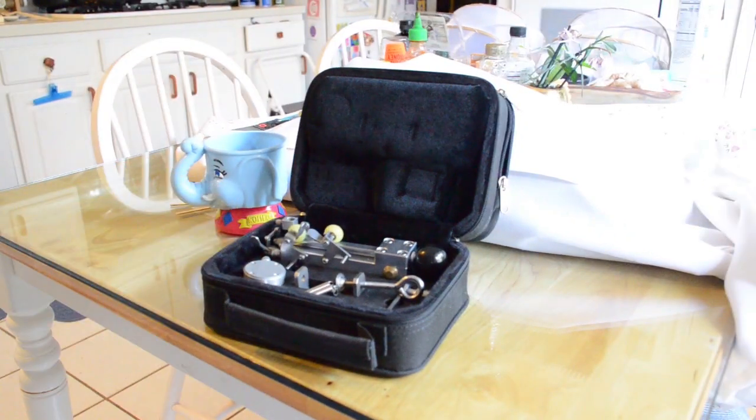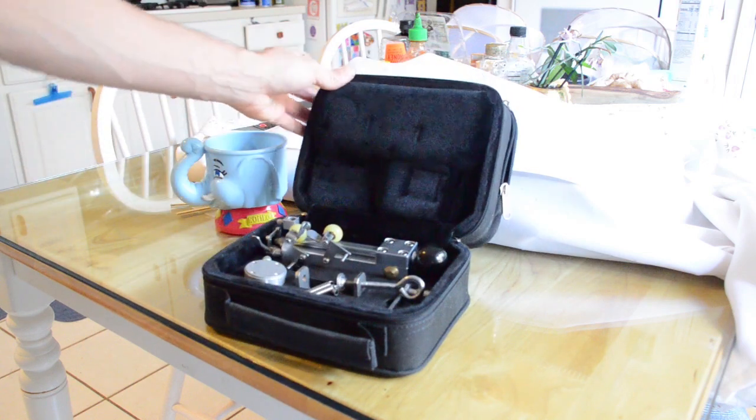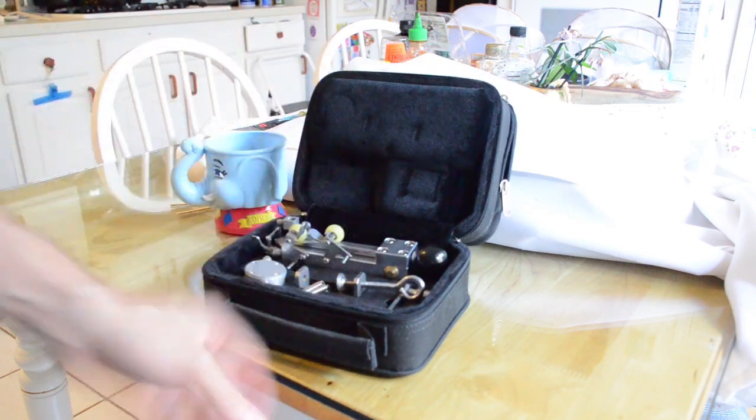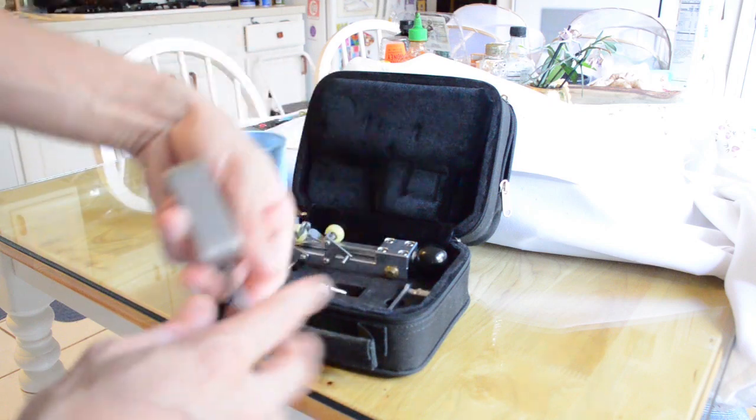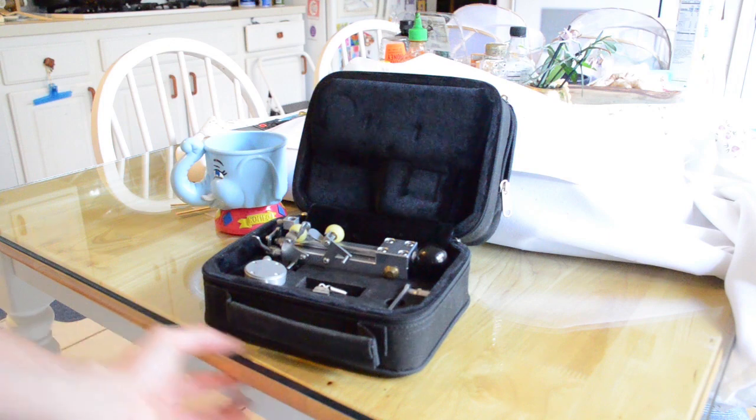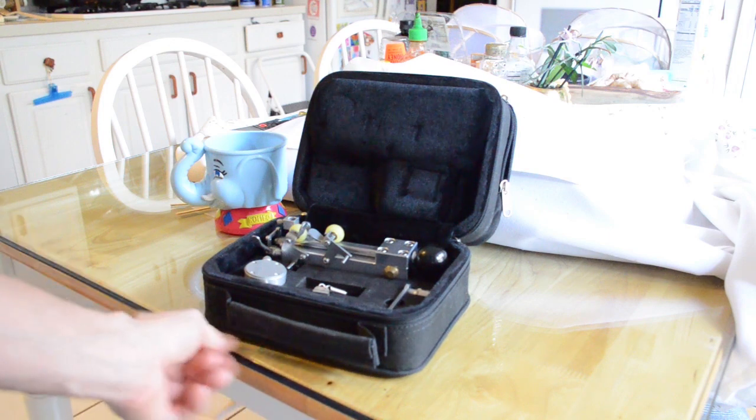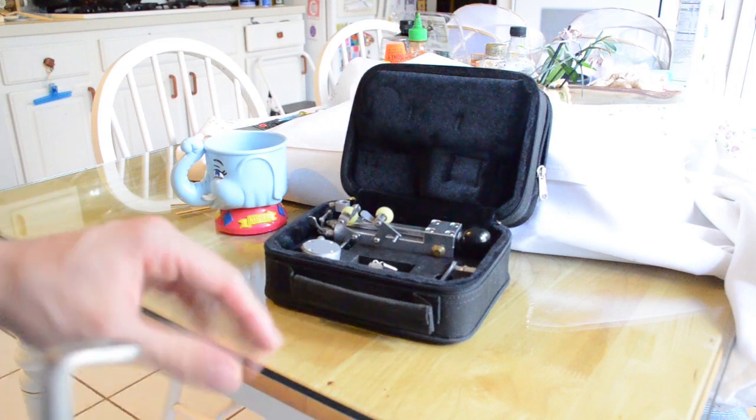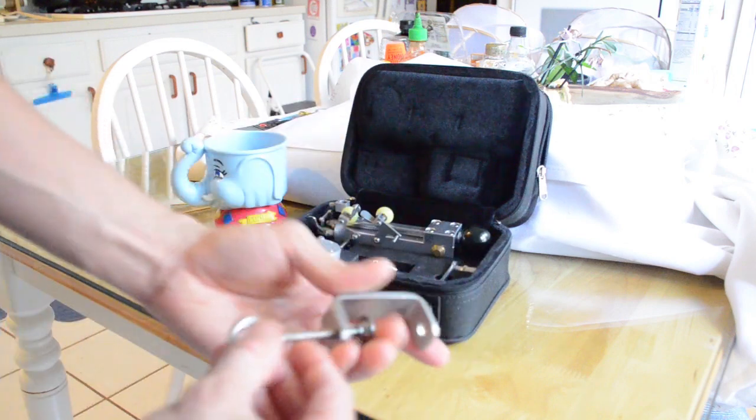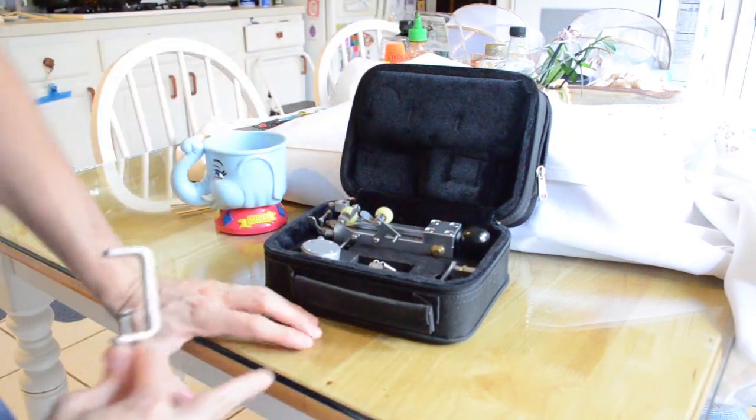Okay, so as previously seen, the gouger comes in pieces inside this really cool padded box. I'll take it apart and put it together. Something about using this gouger is you're going to need to clamp it down. So you need a table that has a kind of square edge. The reed table that I use normally has more of a rounded edge, so I can't clamp this gouge to that table, but luckily I'll be changing workstations soon.